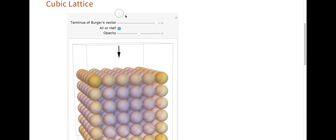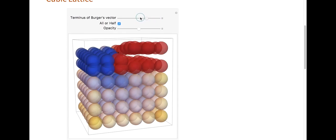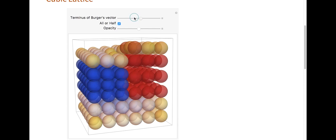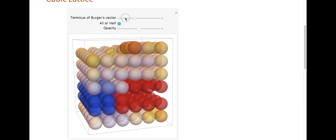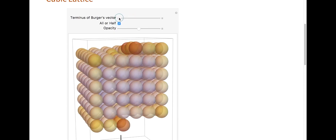Here is a cubic lattice. And as I move the terminus of the Burgers vector through, you see this layer of high and low energy moving through the whole system until it passes all the way through. And now you have the geometry that you can tell is of a screw dislocation.